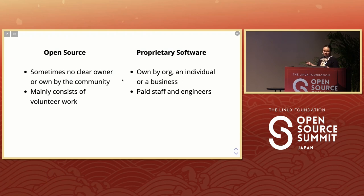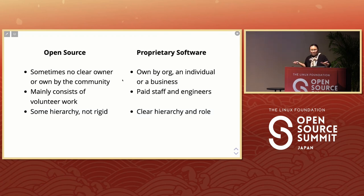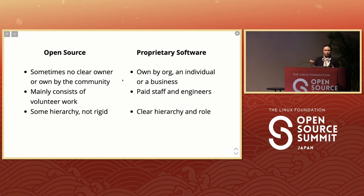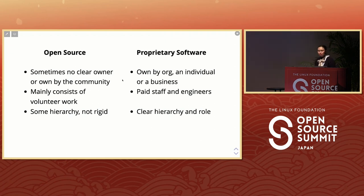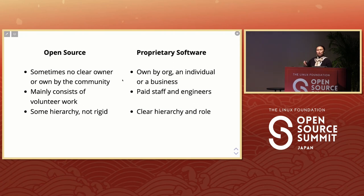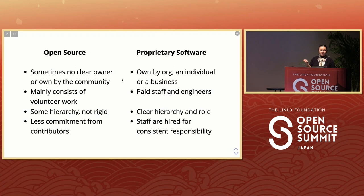In open source there is some hierarchy — some people have access rights to repos, sometimes called maintainers, owners, or leaders. But it's not rigid; each project may have different governance. Bigger projects may have a steering council making ultimate decisions, while smaller projects may have just one maintainer in charge of everything. For proprietary software it's a company, so the hierarchy is very clear — you know who your boss is and who makes all the decisions.